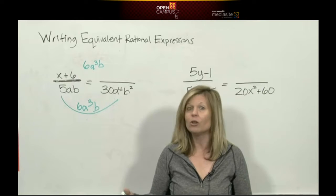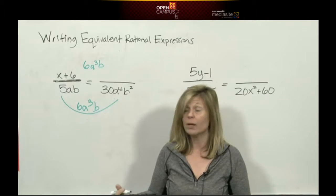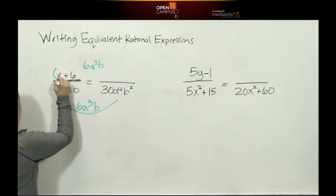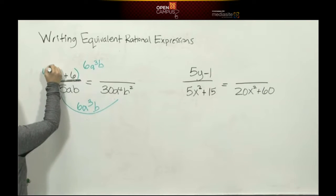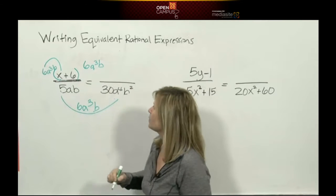I know what you're thinking - you don't see the parentheses. So if you want to put the x+6 in parentheses and write the monomial in front, that's great. Let's go. What is 6a³b times x? That would be 6a³bx.